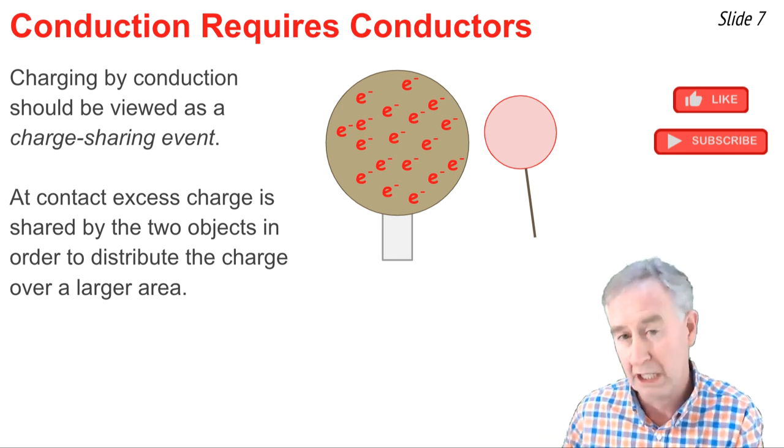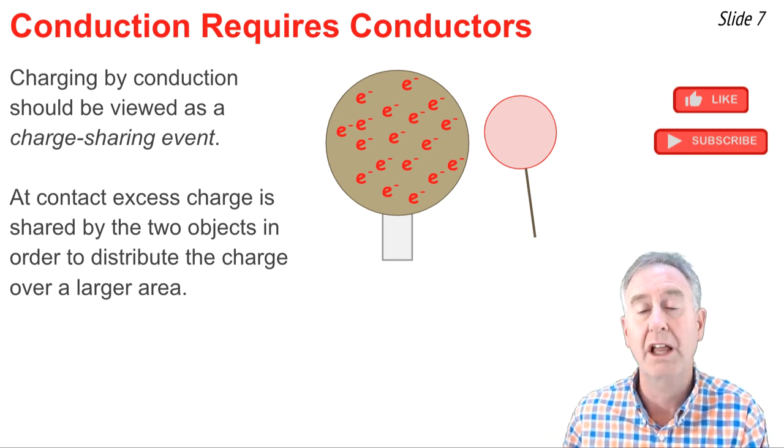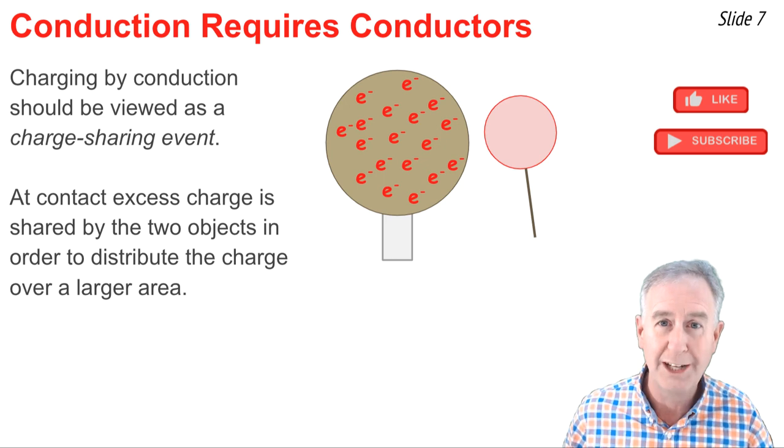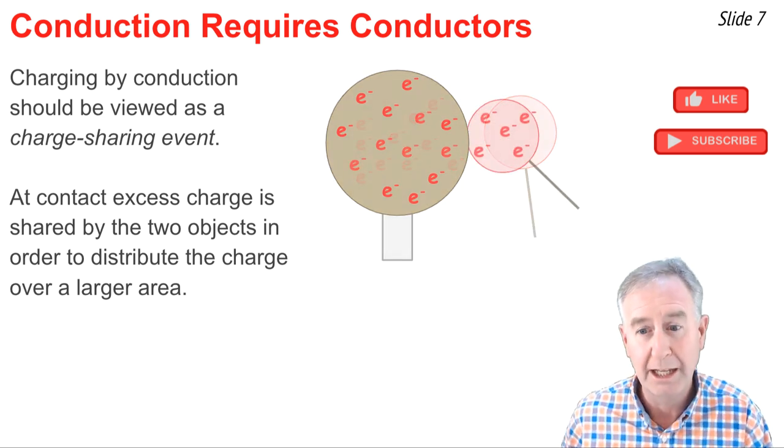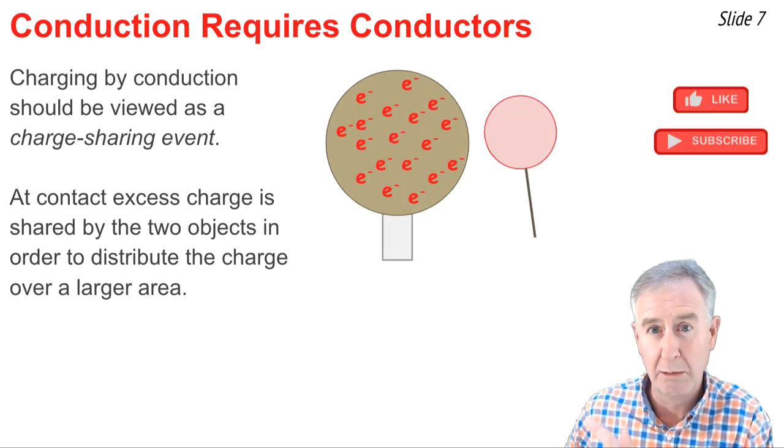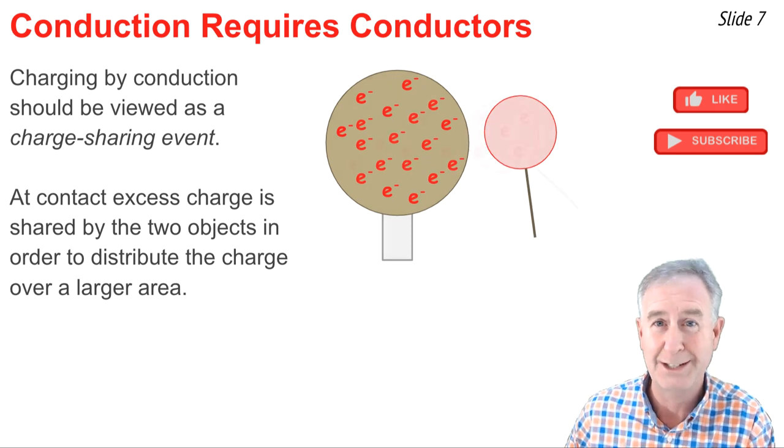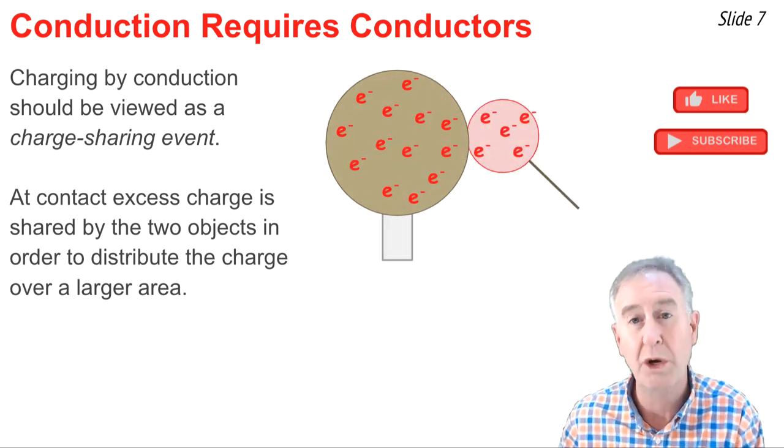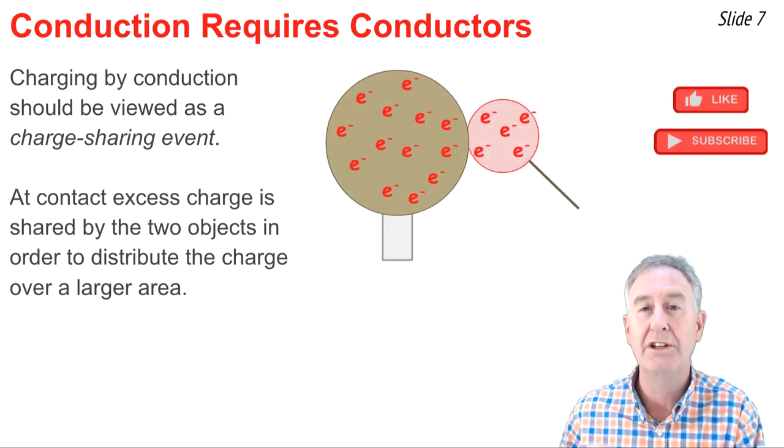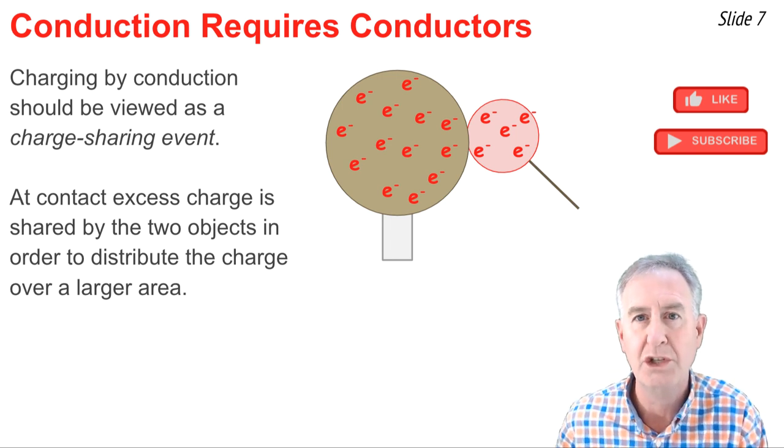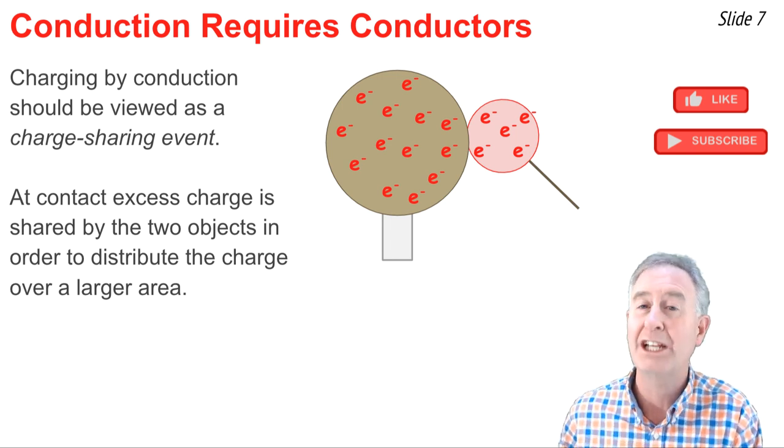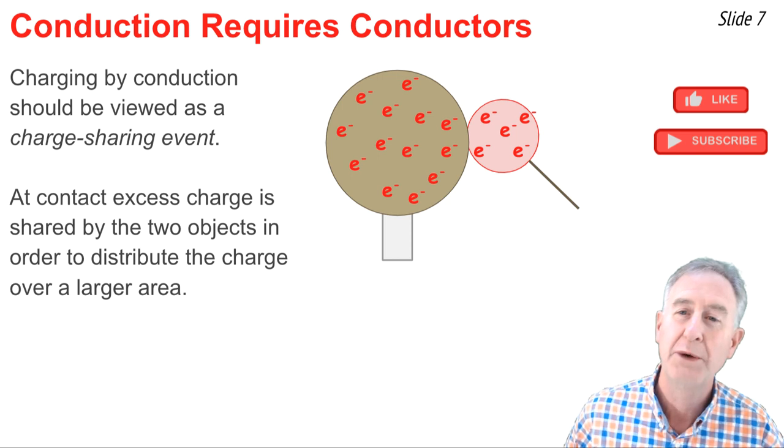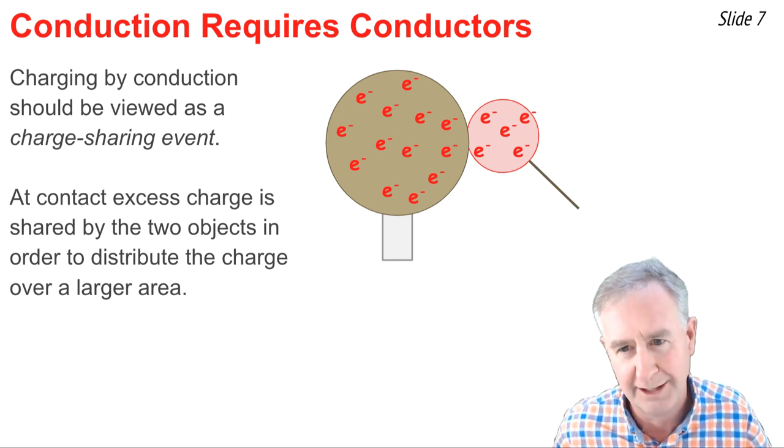And when it does, electrons can move from object A to object B. So there you see it. I'm going to do it again. I'll go back and forth. You see it. You don't see it. You see it. You don't see it. And what's going on upon contact is that you're not gaining or losing electrons. You're just sharing them. Object A is sharing the excess of electrons with object B. It's a charge sharing event.